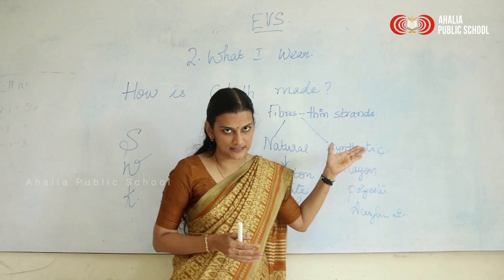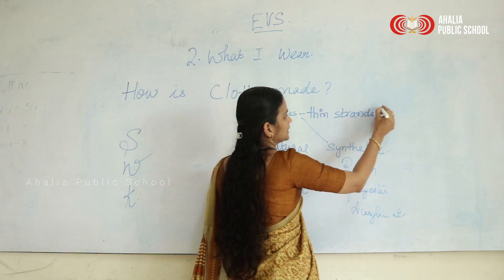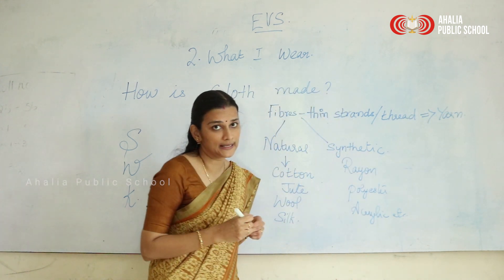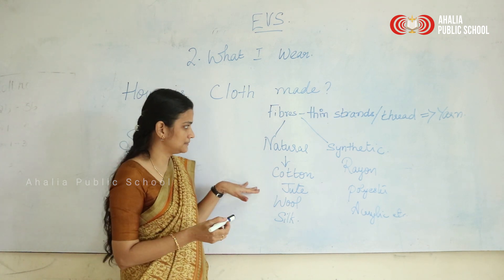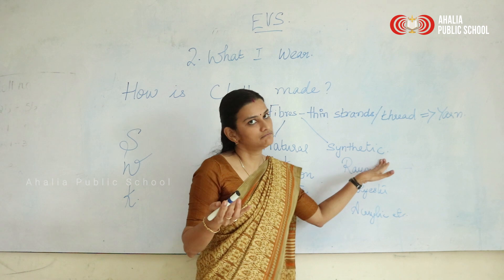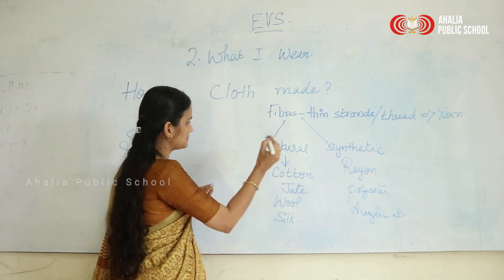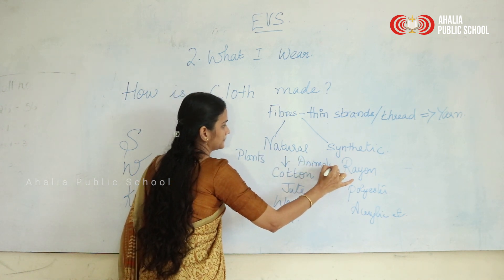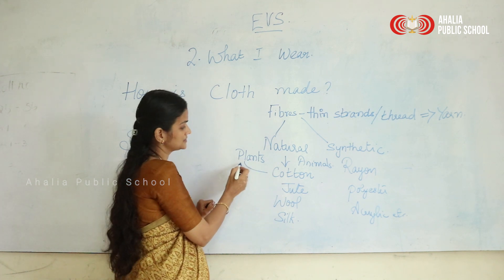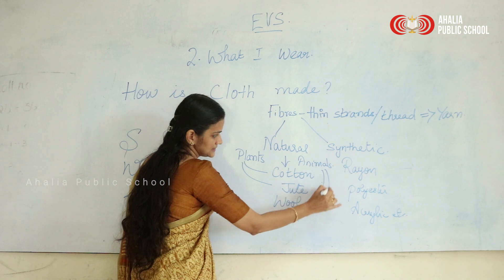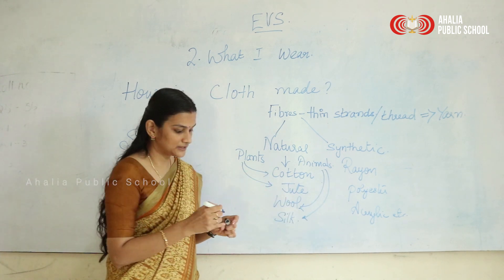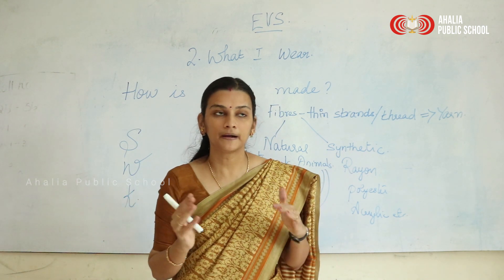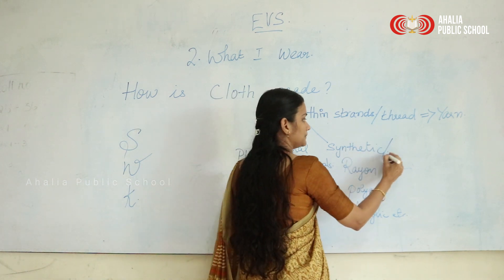Cloths are made up of fibers — thin strands, also called yarn. You can get yarn from nature, from plants or animals, or it can be made in factories by machines. From nature it is of two types: plants and animals. Cotton and jute come from plants, whereas wool and silk are from animals. Synthetic fiber is man-made.